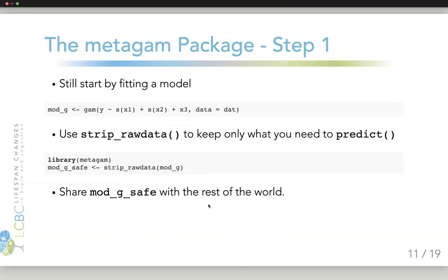That's the first place where the metagon package comes in, because still each group would fit its own model. However, we have a strip raw data function that works both for MGCV and for GAM4 that you can apply to the model. First you fit the model, then you apply strip raw data, and that function removes everything that is on the individual level, and it keeps only the few things you need to create those predictions. Then you can share this model with the rest of the world, and the only thing you expose is your coefficients, their covariance matrix, and the basis function that you used.